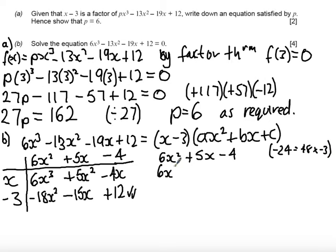So if I split up the 5x squared into plus 8x and minus 3x minus 4, I can then factorise the first pair of terms. I can take out 2x as a common factor and it leaves me 3x plus 4.